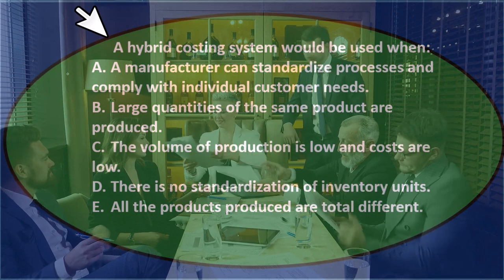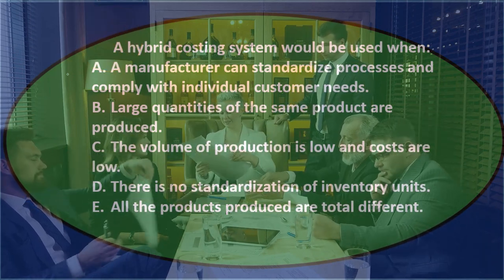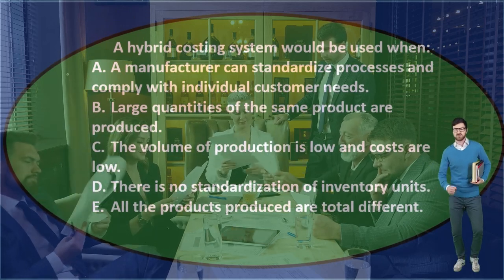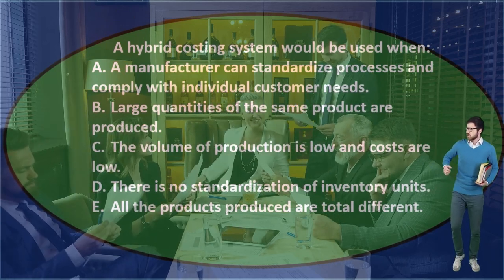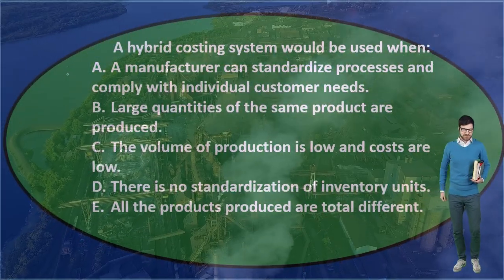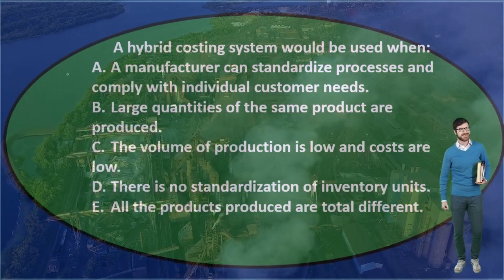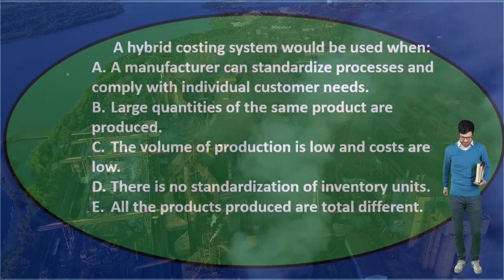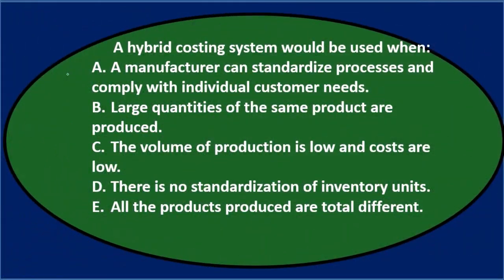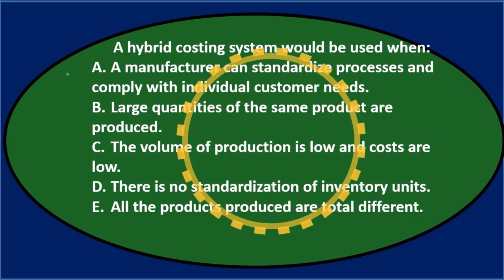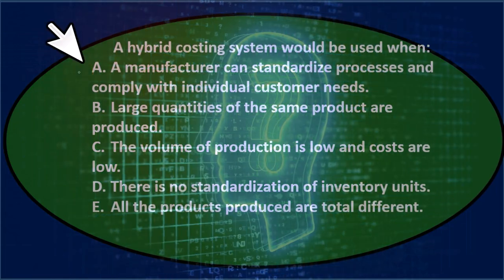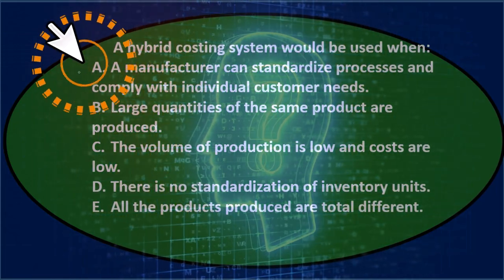A hybrid costing system is some combination of job cost and process cost systems — using components of both. So we're asking: when would you need both? Option A — a manufacturer can standardize processes and comply with individual customer needs — sounds like it could be it. Option B — large quantities of the same product — that's purely a process cost system; no job cost factor needed.